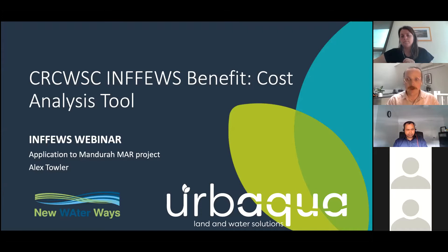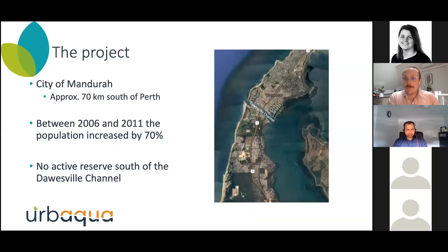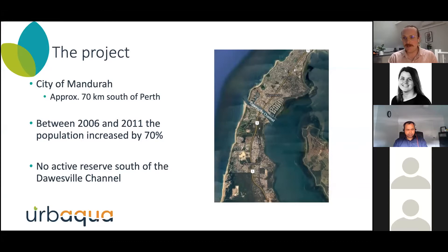We tried to look for a project that was going to be suitable to apply the tool to — one that made sense and had a couple of options so we could explore how the tool is applied. The project we came up with was based in the city of Mandurah. It's a project that's actually already been completed, so the BCA was applied retrospectively as a way of looking at how the tool is applied rather than actually using it at the decision point.